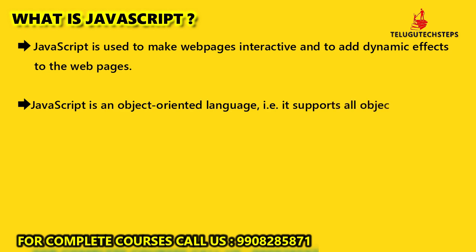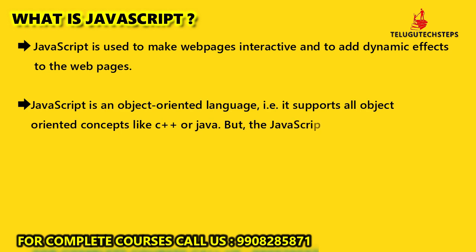JavaScript is an object-oriented language. It supports all object-oriented concepts including encapsulation, polymorphism, interfaces, and inheritance — just like C++ and Java. But JavaScript is not related to Java programming language in any way. Students often get confused about Java and JavaScript, but there is no relation between Java and JavaScript.